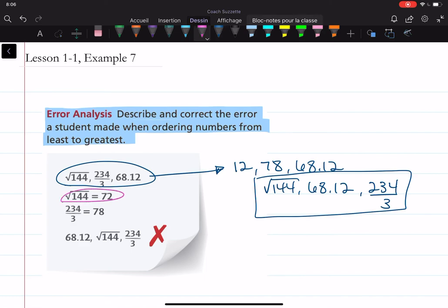Well, look at the second line here. What's this? That's not right. The square root of 144 is not 72.